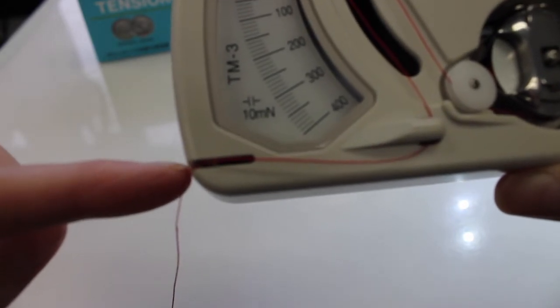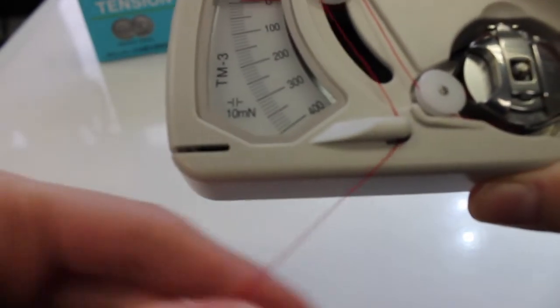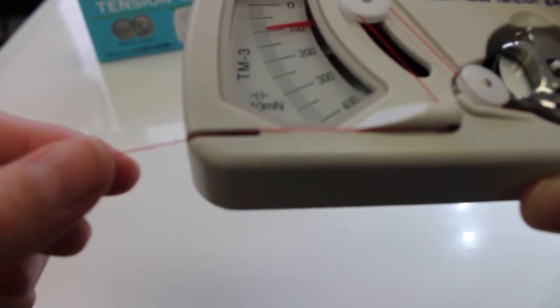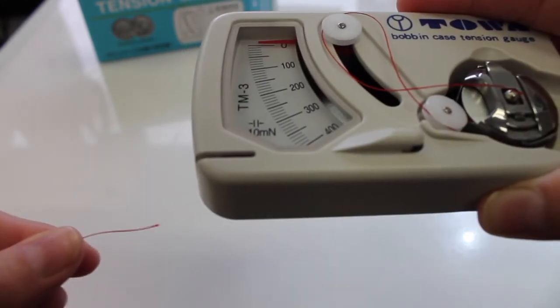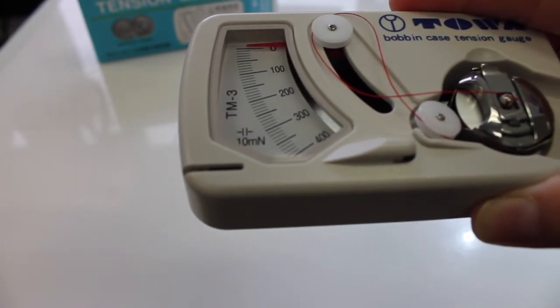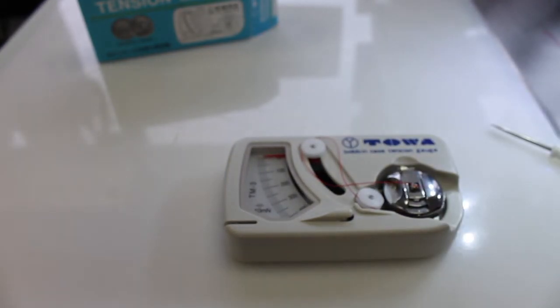Once you get your tension set, there is a little thread cutter here on the side. I can just take my long tail of thread, pull straight down, and that will cut that excess thread off for me. Now my bobbin case tension is perfectly set, and I'm ready to put it into my machine and start quilting.